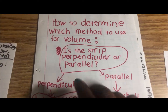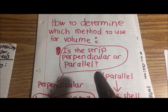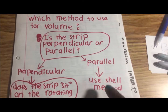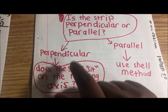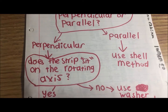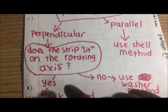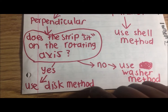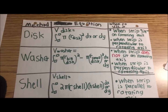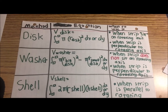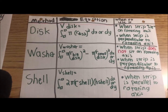You ask yourself: is the strip perpendicular or is it parallel? If it's parallel, just use the shell method. But if it's perpendicular, ask yourself one more question: does the strip sit on the rotating axis? If yes, use disc. If no, use washer.